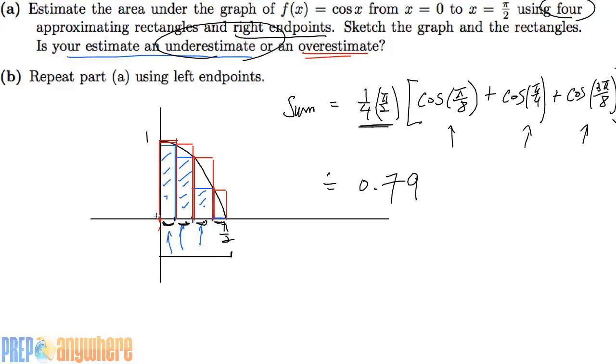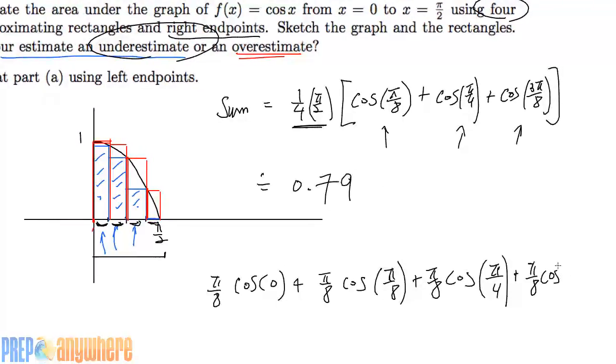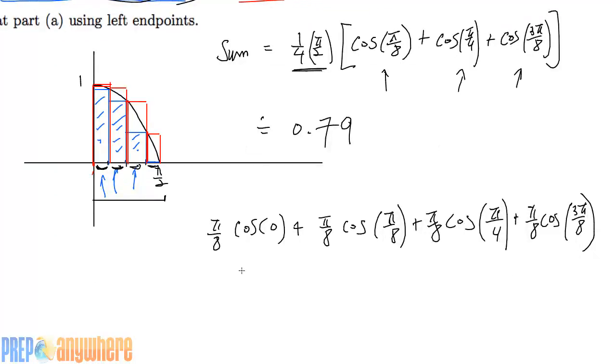So the left endpoint: the first height is taken at cosine of 0 times π/8. That's the base. And then it's going to be cosine of π/8, 2π/8 so π/4, and lastly π/8 cosine of 3π/8. We're going to add these four up and we get 1.18 approximately. You can see it's a lot bigger.